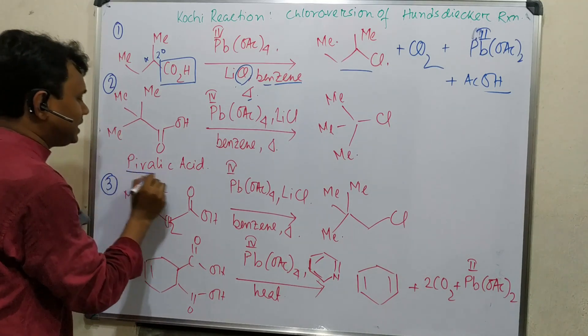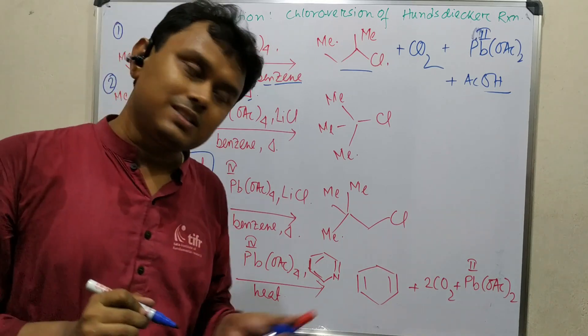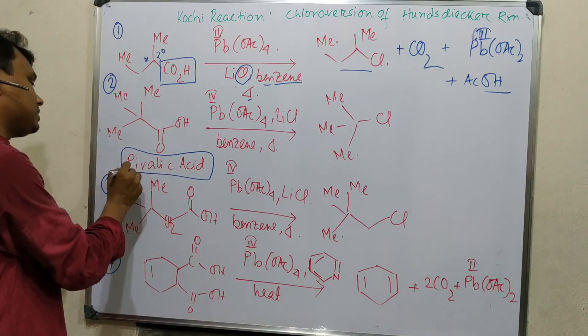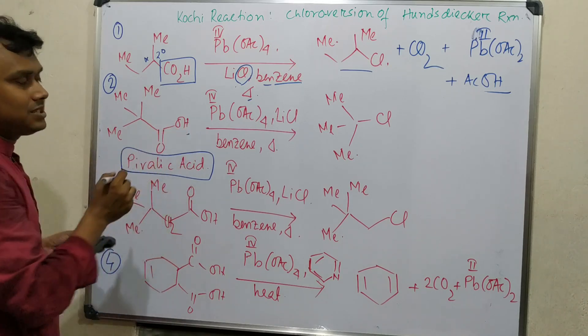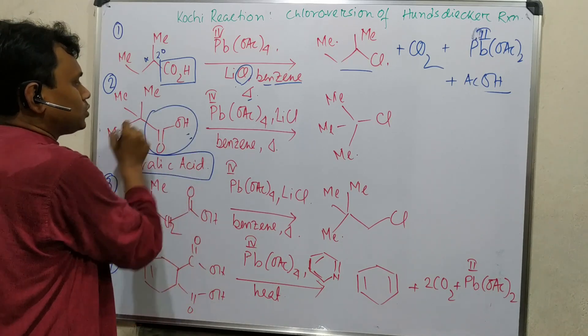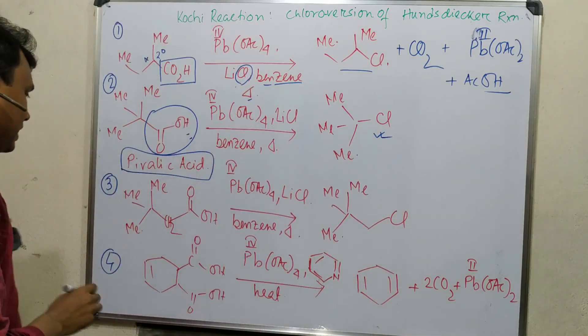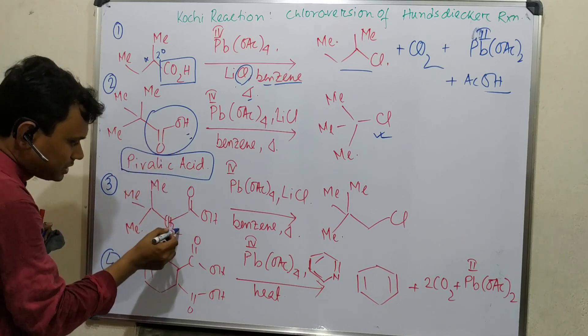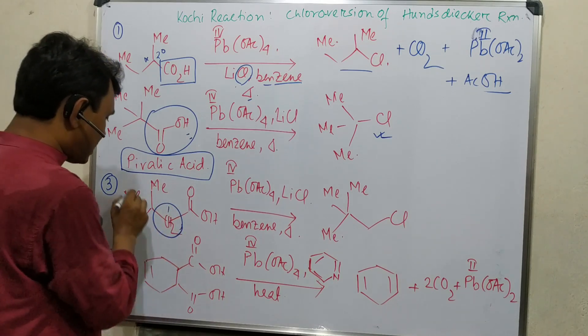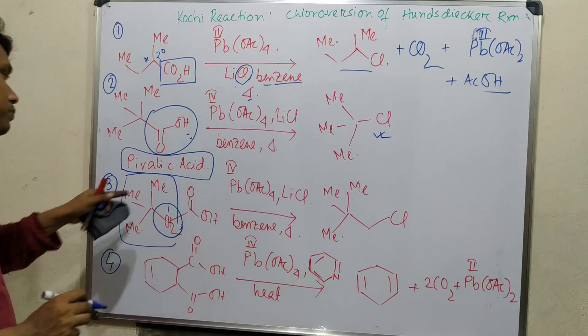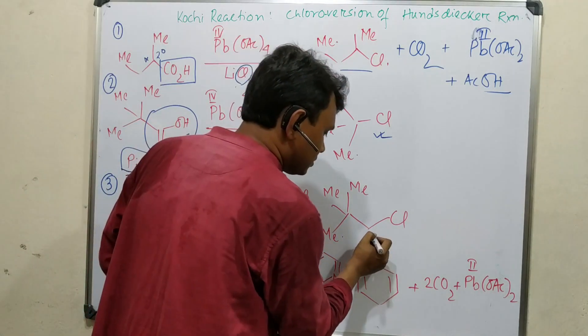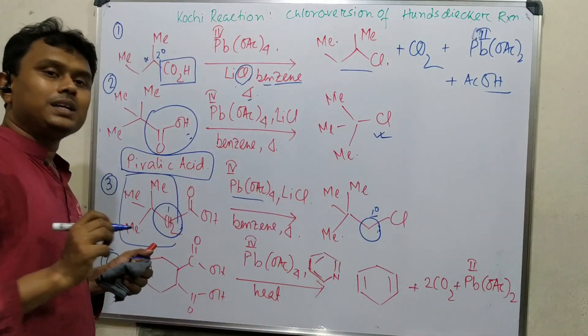These are the overall products. The reaction is completed. Now the second example is pivalic acid. This is a very interesting acid with a tertiary butyl group attached. It's difficult to prepare using special methods. This pivalic acid also undergoes the reaction under the same conditions and the carboxyl group is eliminated to produce the chloro compound.